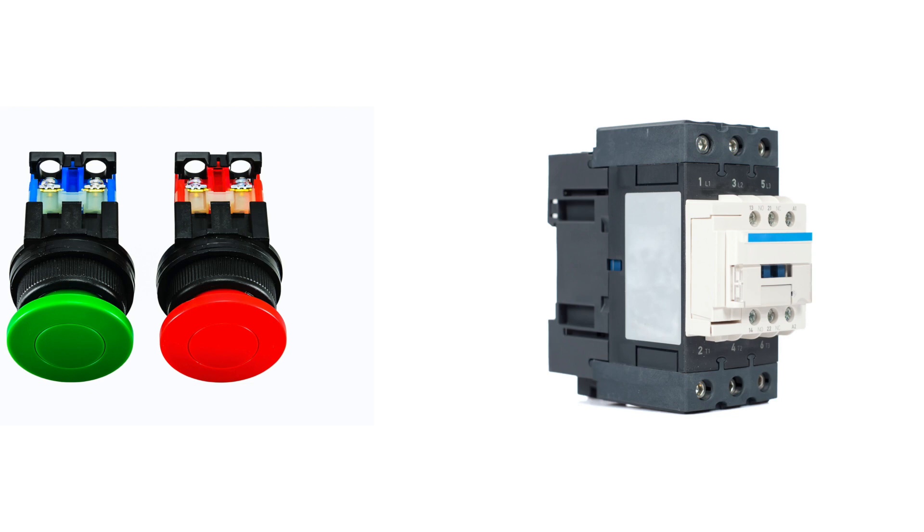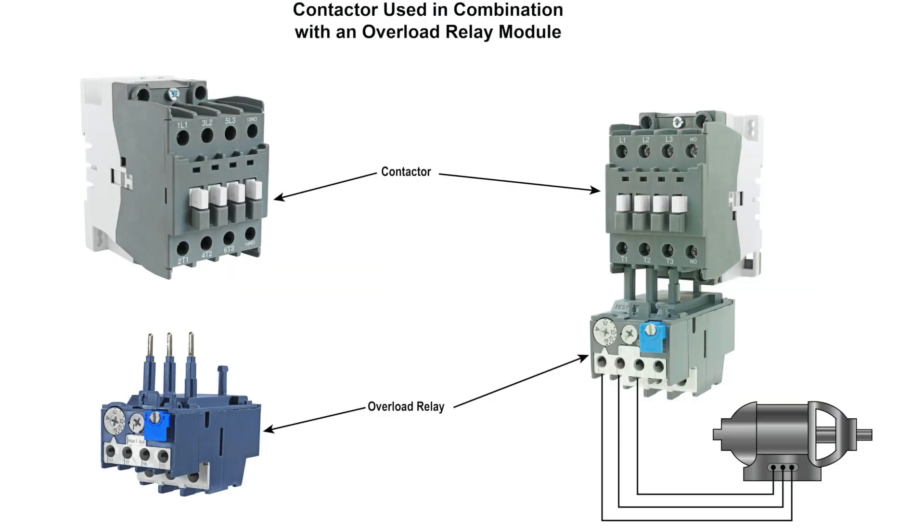Contactors are used in conjunction with pilot devices to automatically control high current loads. The pilot device, with limited current handling capacity, is used to control current to the contactor coil, which is used to switch heavier load currents. Another more common use for contactors is using them in conjunction with an overload relay assembly in an AC motor starter. The example provided shows a contactor used with an overload relay to switch a motor load.